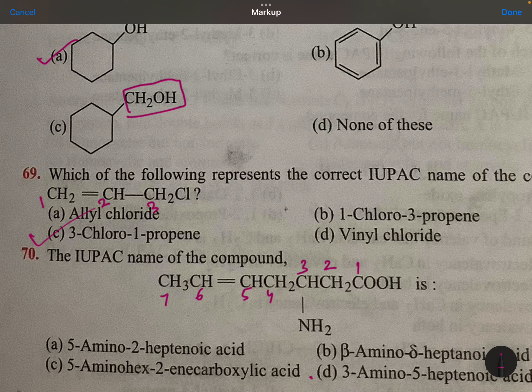So hept-5-enoic acid, 3-amino: 3-aminohept-5-enoic acid. Correct.